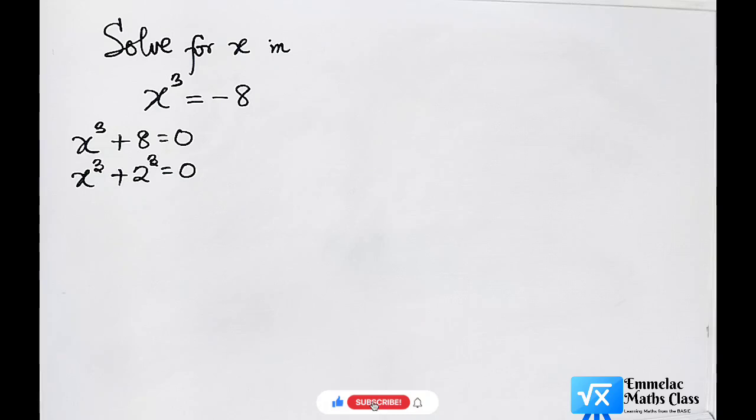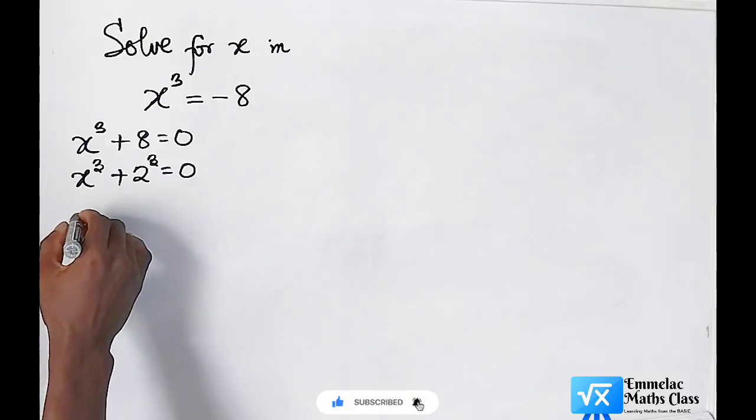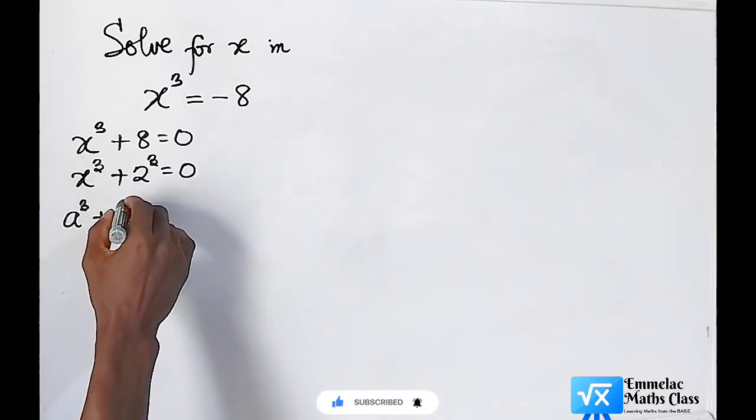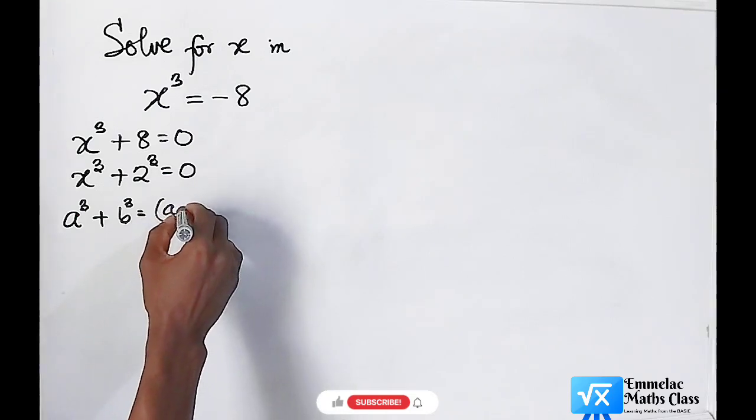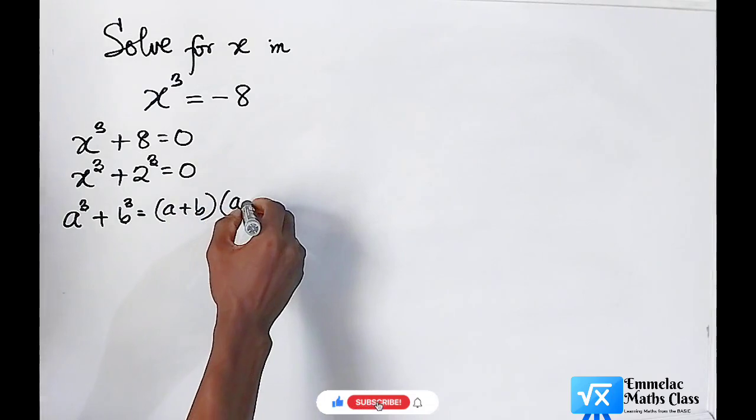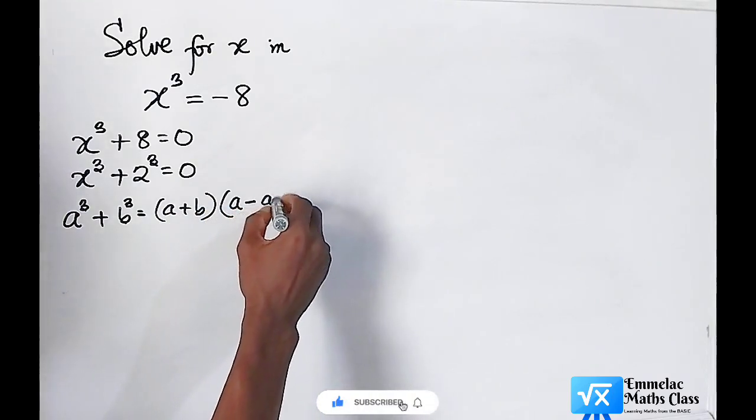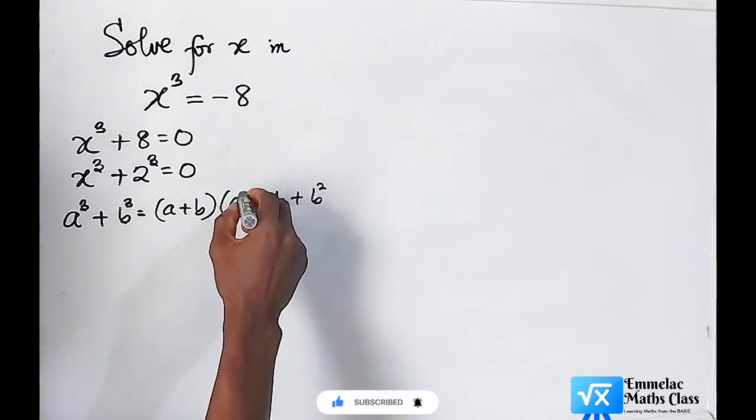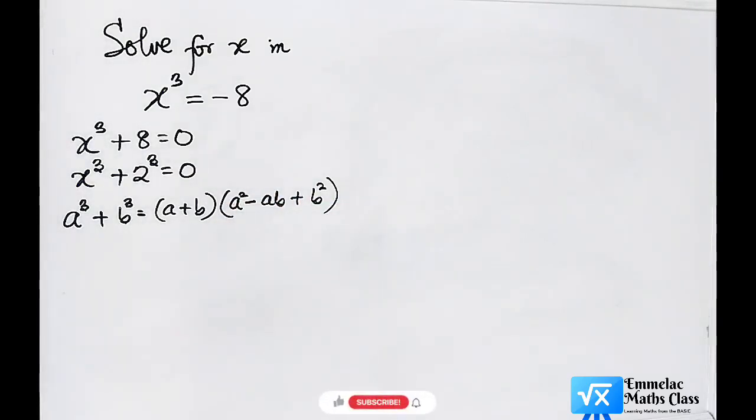According to an algebraic expression rule, if we have a³ + b³, which is the sum of two cubes, this will give us (a + b) into (a² - ab + b²).